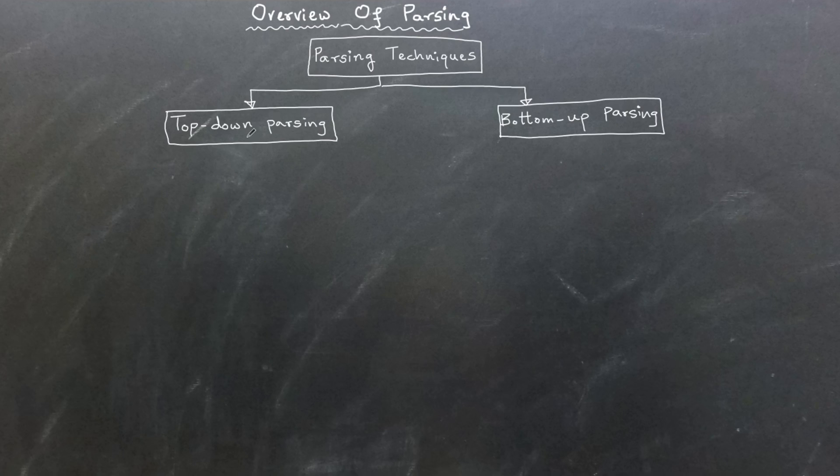Under top-down parsing, there are two primary techniques. The first technique is LL(1) parsing, which scans the input from left to right and constructs a leftmost derivation of the parse tree. This technique usually uses a single look-ahead symbol.